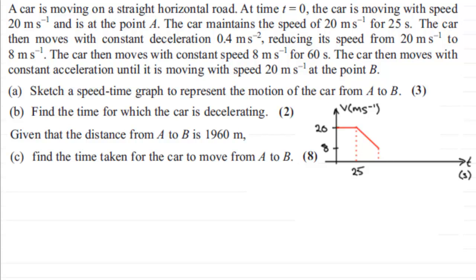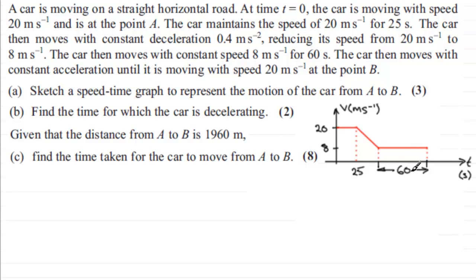We don't know that time yet, but we'll carry on. The car then moves with a constant speed of 8 meters per second for 60 seconds, so the graph is now a horizontal line. Dropping a dotted line down, this time interval represents 60 seconds — we'll mark that in with an arrow on both ends to illustrate that time interval.